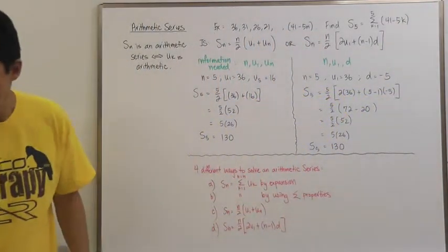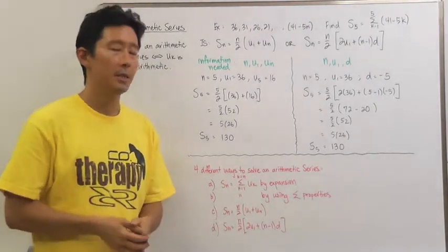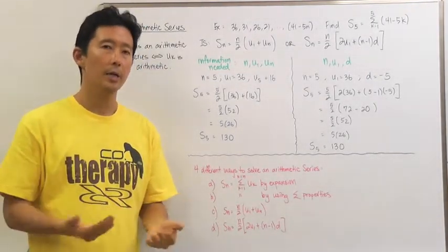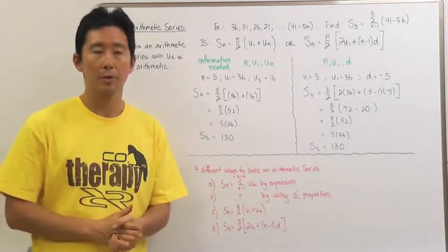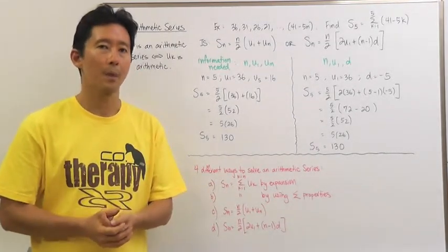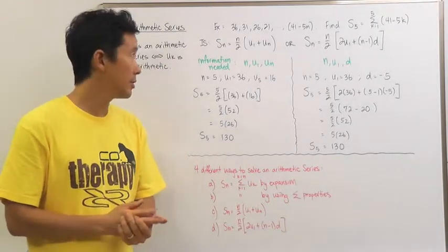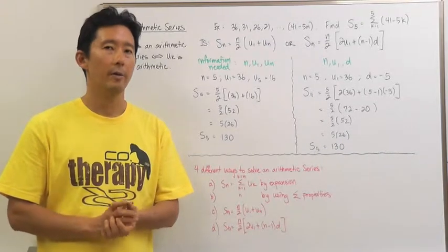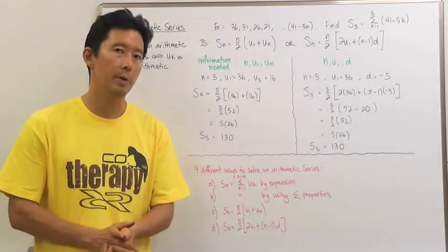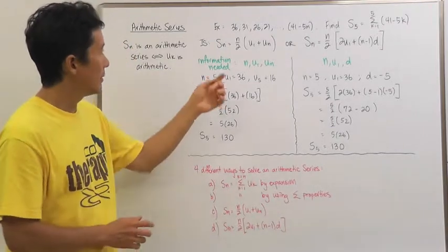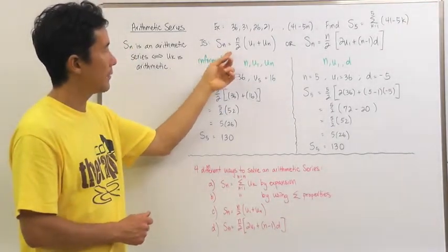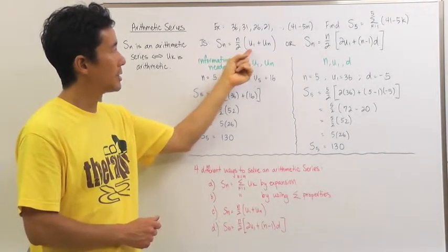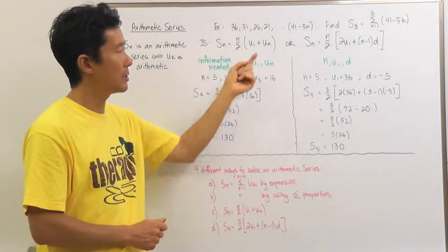Now we did that previously using some of the rules and properties of sigma notation, as well as just by substituting and finding what those terms are when you add them all together. We're going to add two different means now to find the sum of an arithmetic series — and it has to be an arithmetic series, so keep that in mind. Here is the first formula: S sub N is equal to N over 2 times the quantity U sub 1 plus U sub N.